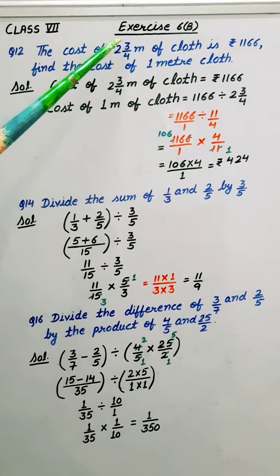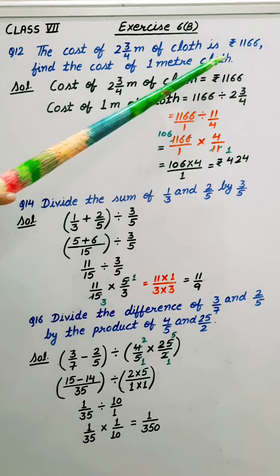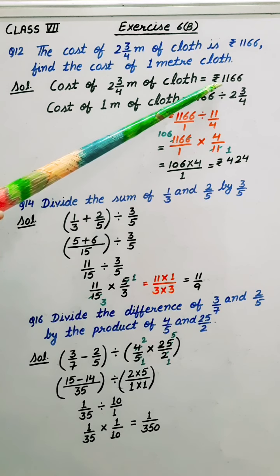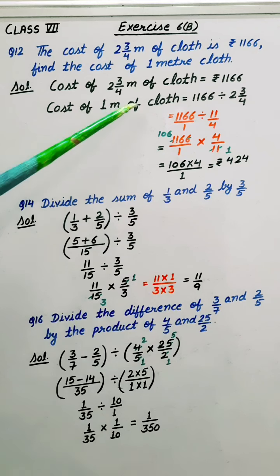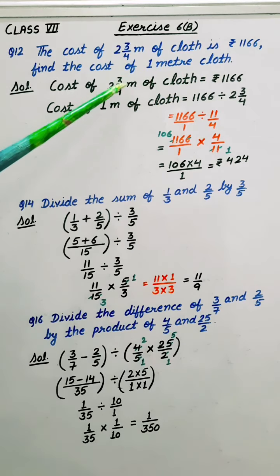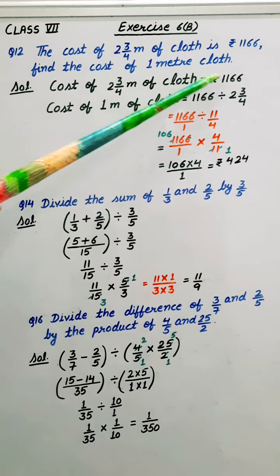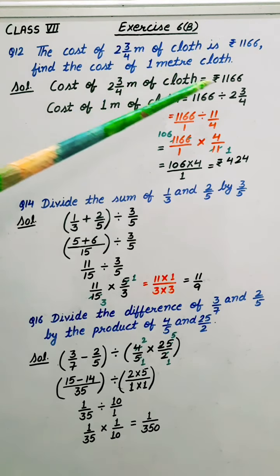Cost of 2 whole 3 by 4 meter of cloth is given here rupees 1166. Now we have to calculate cost of 1 meter of cloth. So for that we will divide these two numbers. So 1166 divided by 2 whole 3 by 4.